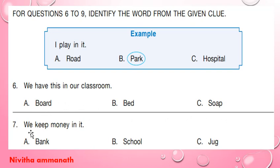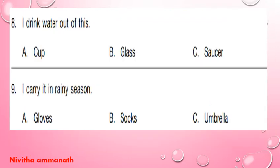We keep money in it — bank, school, jug. We keep money in a bank, so A is the correct option.